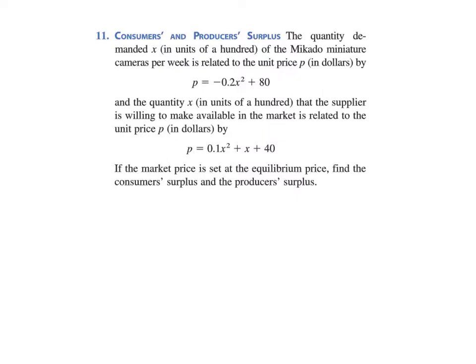So in problem 11, you can see it here, the quantity demanded x in units of 100—that's going to be a big deal later—of the Mikado miniature cameras per week is related to the unit price in dollars by this function. So this turns out to be our demand function, d(x). They don't state it there, but that's going to be d(x).